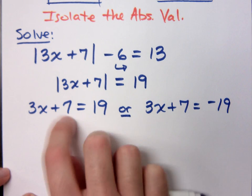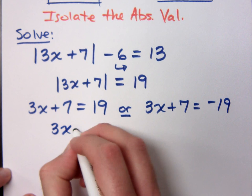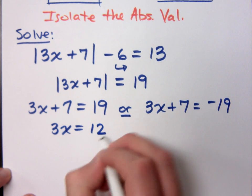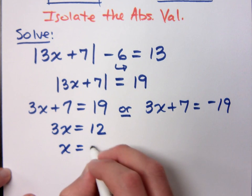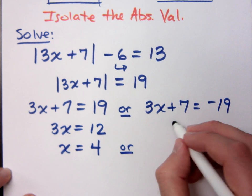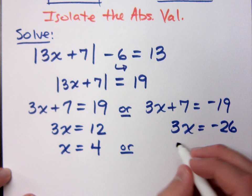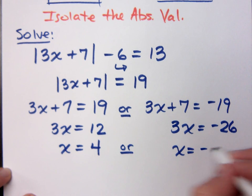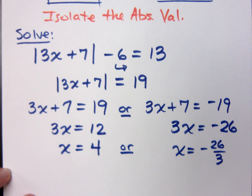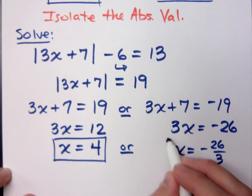3X plus 7 equals 19, right? We know that the inside of this absolute value is going to equal 19. Or, for it to be a true statement, the inside of this stuff has to equal negative 19, right? So 3X is equal to 12, which means X equals 4. What about over here? 3X equals negative 26 and then X equals negative 26 thirds. So these are our two solutions.